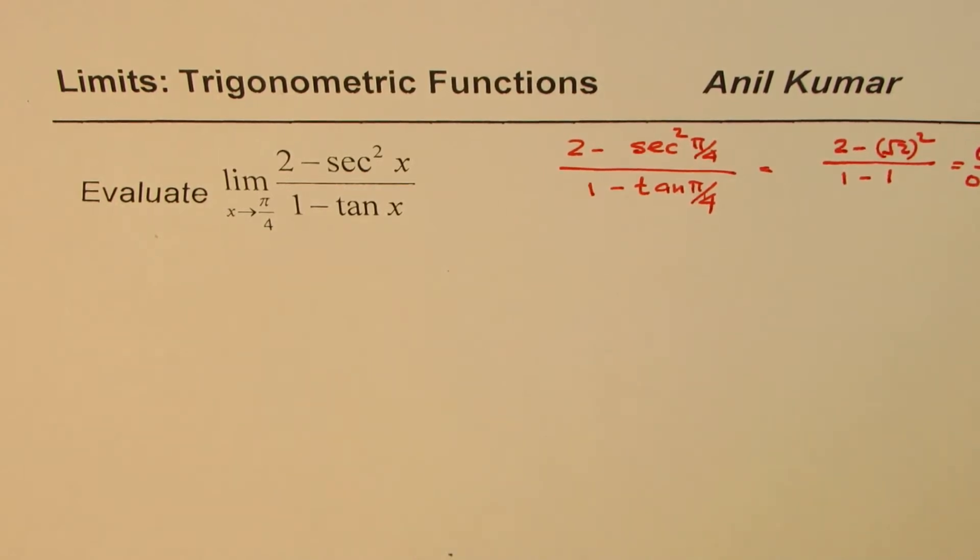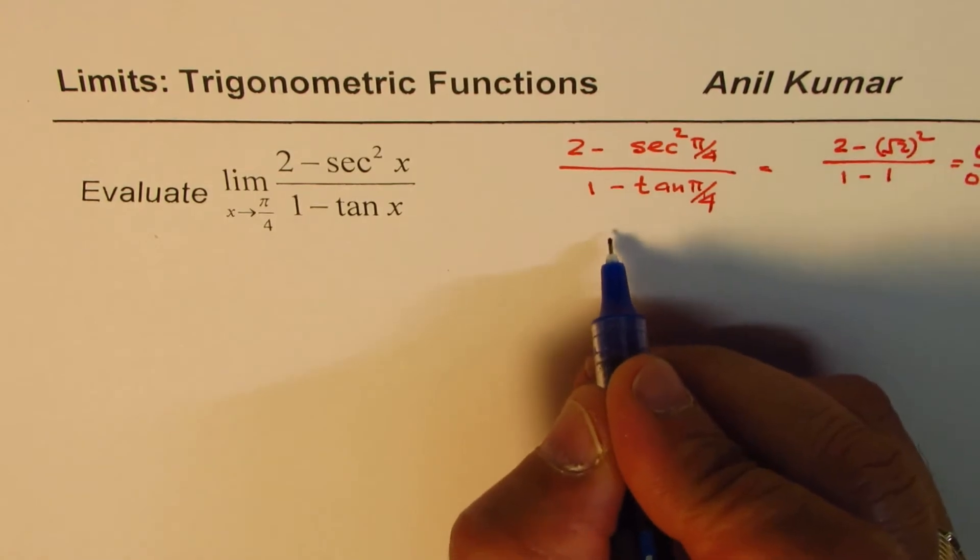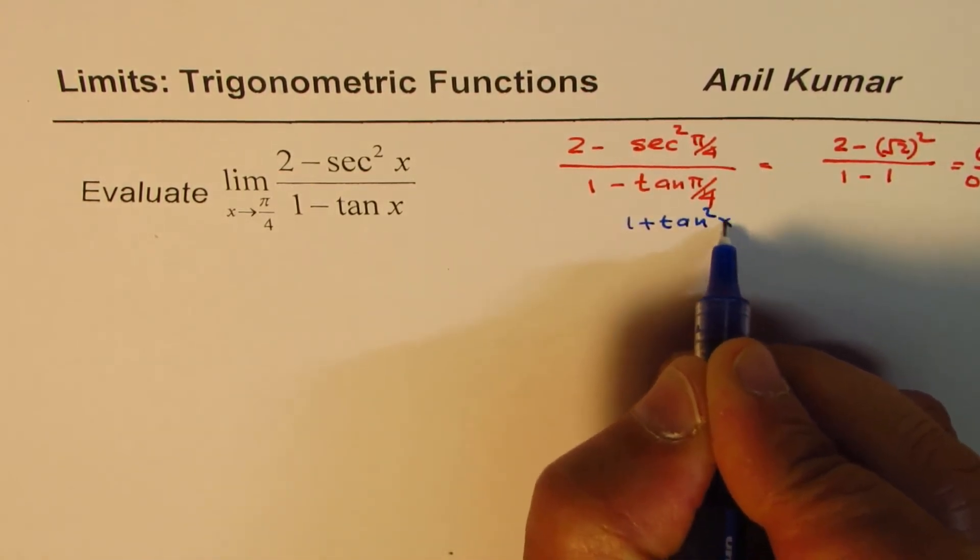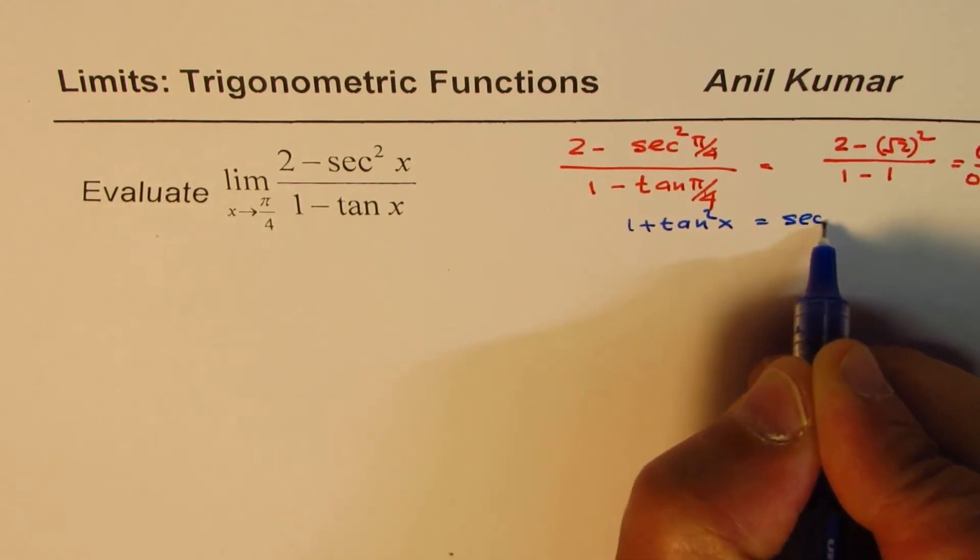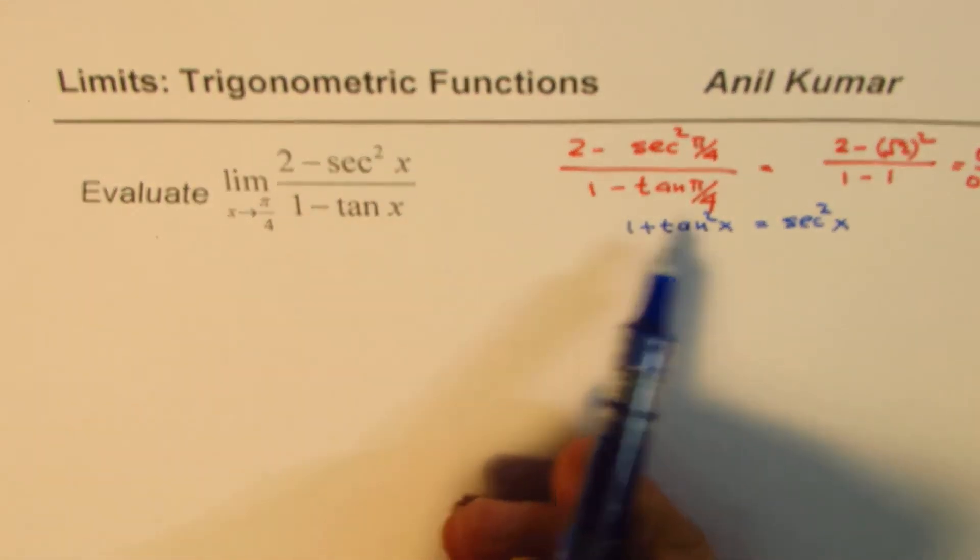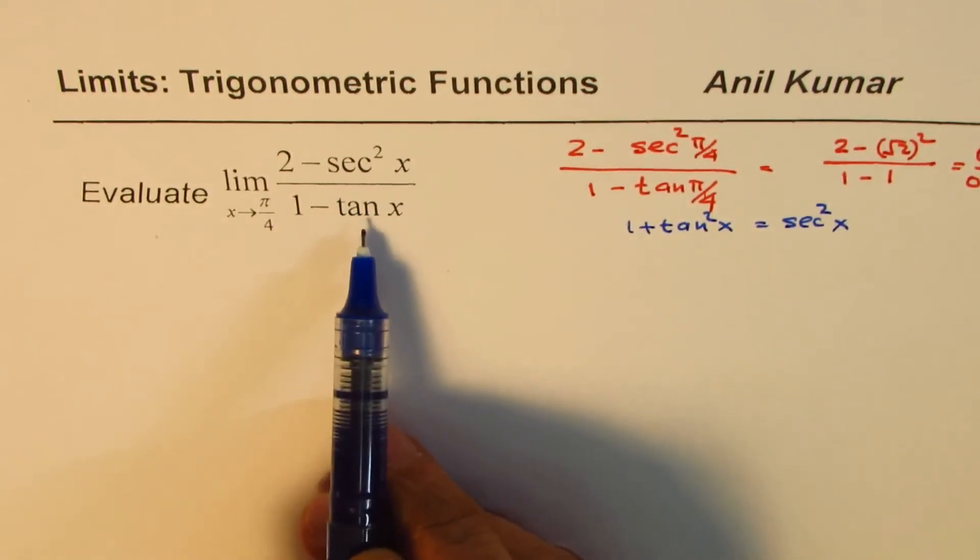We'll simplify by applying trigonometric identities. One identity I'm going to apply is 1 + tan²x = sec²x. This will help us write the expression in terms of tan.